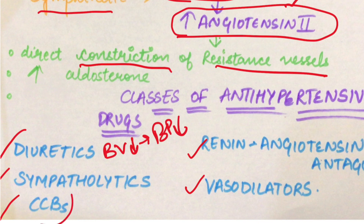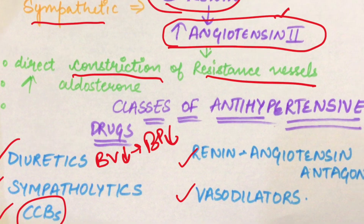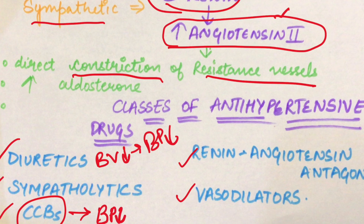Next is CCB — calcium channel blockers. When calcium influx occurs in blood vessels, there is contraction and constriction of blood vessels, increasing blood pressure. Calcium channel blockers reduce calcium influx, which causes relaxation of blood vessels — that is the anti-hypertensive action, as blood pressure decreases. Sympatholytics, vasodilators, and renin antagonists we will study separately in the next lecture.